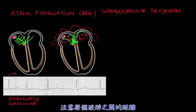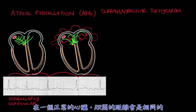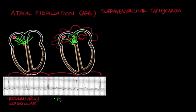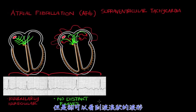What does that mean? Notice how the distance between the R-R intervals is different with each beat. In a normal heart, you'd see evenly spaced R-R intervals. But with AFib, you have different distances between the R-R intervals. Also in AFib, there are no distinct P waves on EKG. Instead, you have these coarse squiggly lines running through.